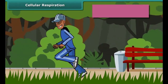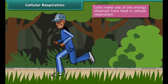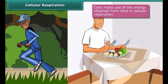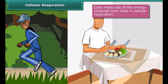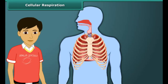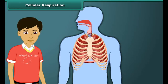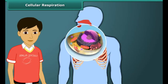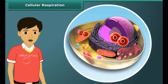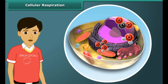Our body needs energy to perform various activities. This energy is produced when the food we eat is broken down into glucose. The breakdown of food requires oxygen obtained through inhalation. Thus, cellular respiration is the process by which cells make use of the energy obtained from food.